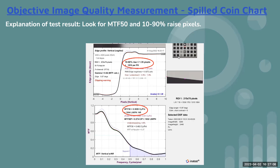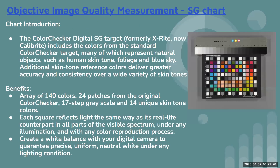It is always recommended to use this chart instead of ISO 12233 because here you can verify a lot of things including focus. I'll be explaining more about this once we execute in the IMATEST master tool. The next chart is the SG chart — the color checker SG chart. SG stands for semi-gloss.